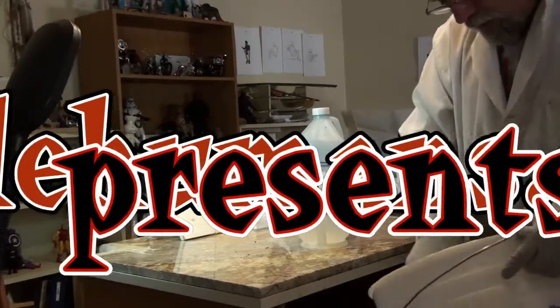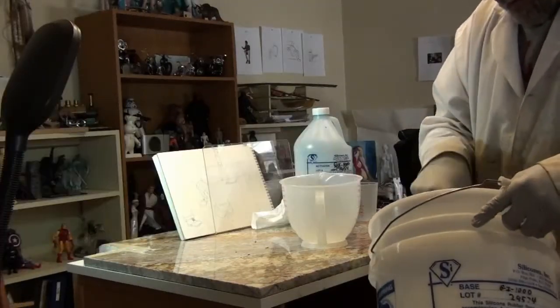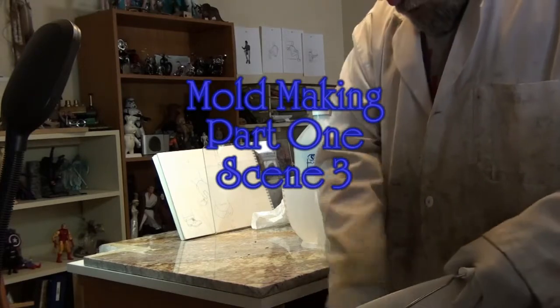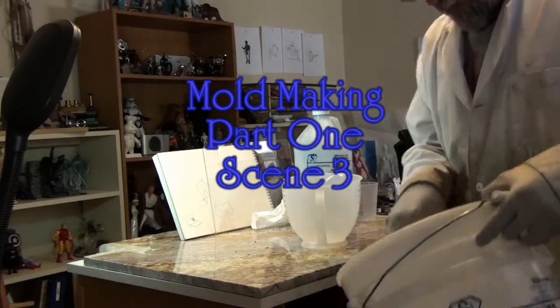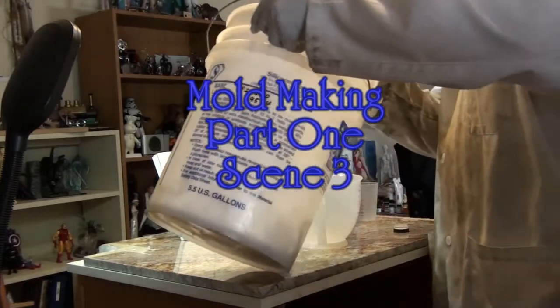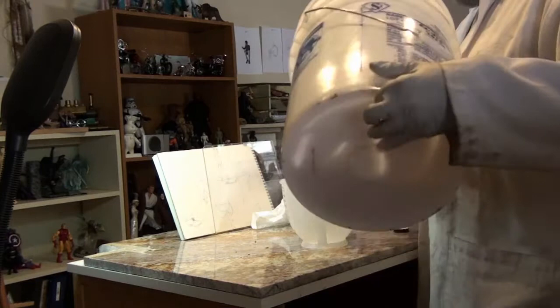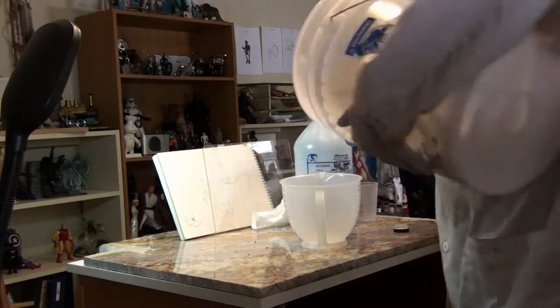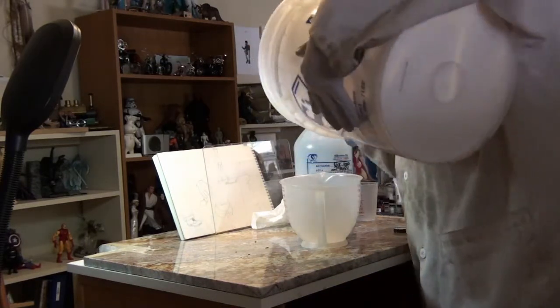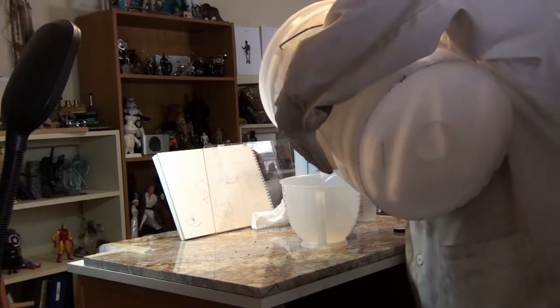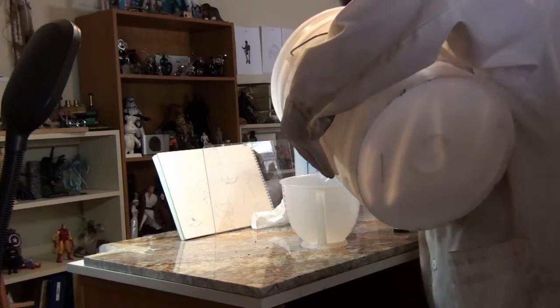Now it's time to move on to mixing the silicon rubber. As you can see, I've got my lab coat on and I'm going to take this five-gallon bucket of silicon and I'm down to the last bit. That's why I'm doing it this way. Normally I scoop this stuff out.